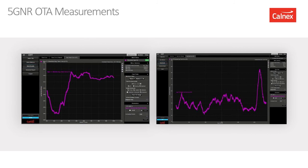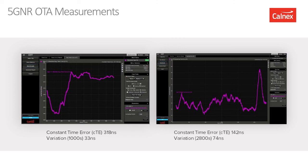Here are some real measurements made in controlled lab environments. The measurement on the left is from a lab in the US, showing a constant time error of about 300 nanoseconds with a variation over a measurement period of 1000 seconds of about 33 nanoseconds. On the right, from a lab in the UK, our 5G signal was measured with a constant time error of 142 nanoseconds over just short of an hour, with a variation of about 74 nanoseconds. Both measurements would be well within specifications and classified as passing.